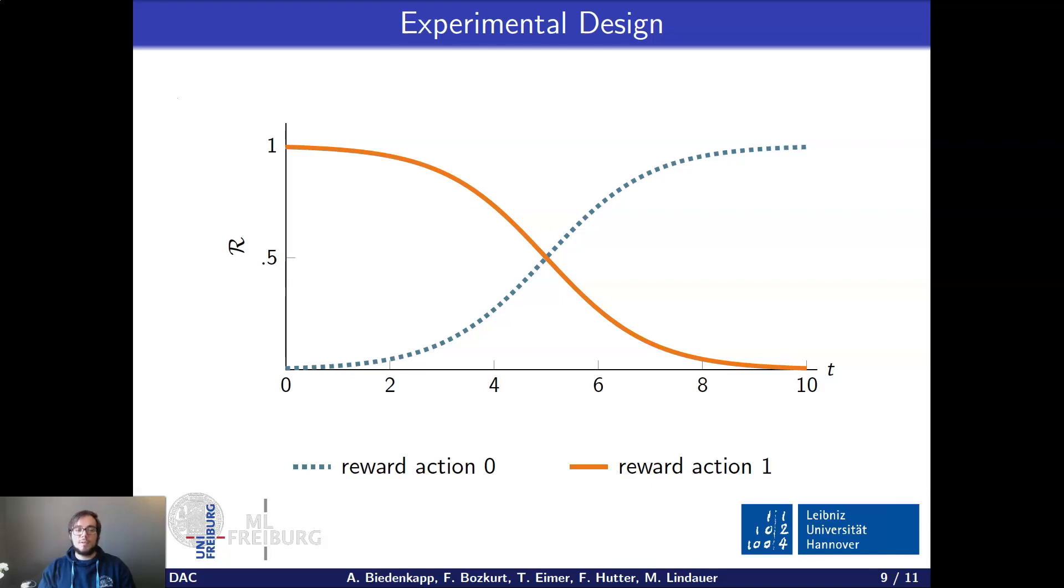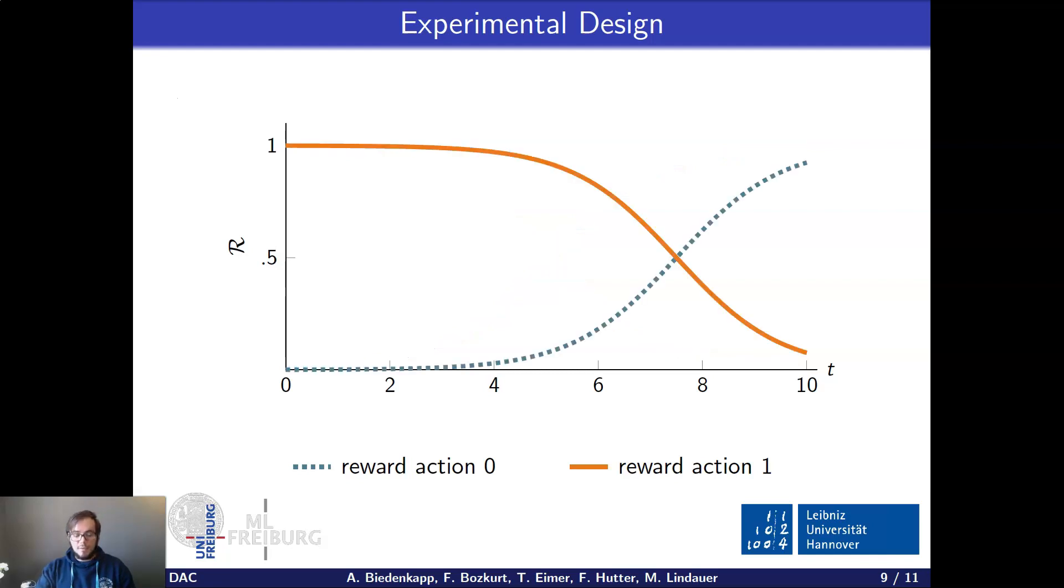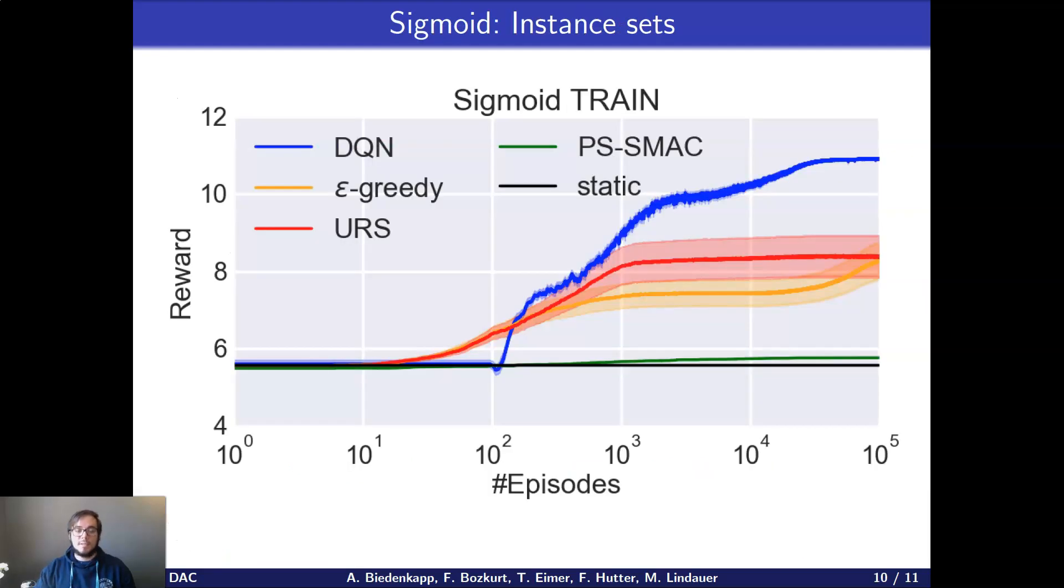So approximating the sigmoid by a step function. And on the y-axis, you have the reward, whereas on the x-axis, it's the timestamp. So the optimal schedule here is to start with playing action one for the first four steps and then at around step five or at latest step six, you switch over to action zero and you get a better reward with action zero. And the nice thing about the sigmoid functions is it lets you easily encode instances by either shifting the inflection point or playing around with the scaling factor. So what we did is we sampled 100 of these different sigmoid functions as training instances and evaluated different configurators on this setting.